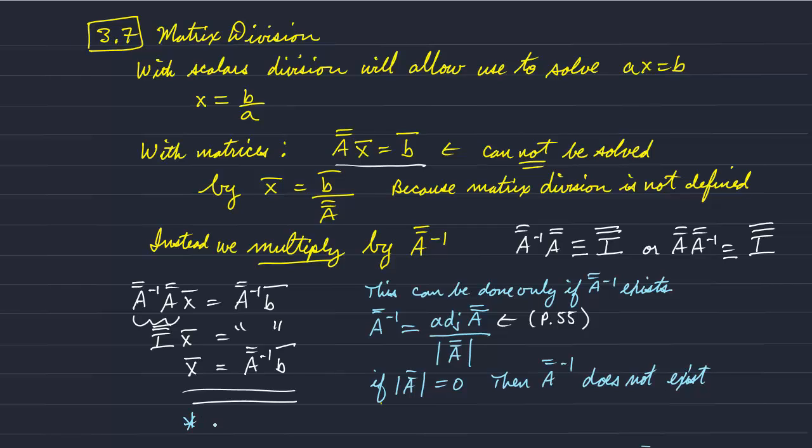So what that means is that the inverse is only defined for non-singular matrices. And a non-singular matrix, well first of all, it's square.